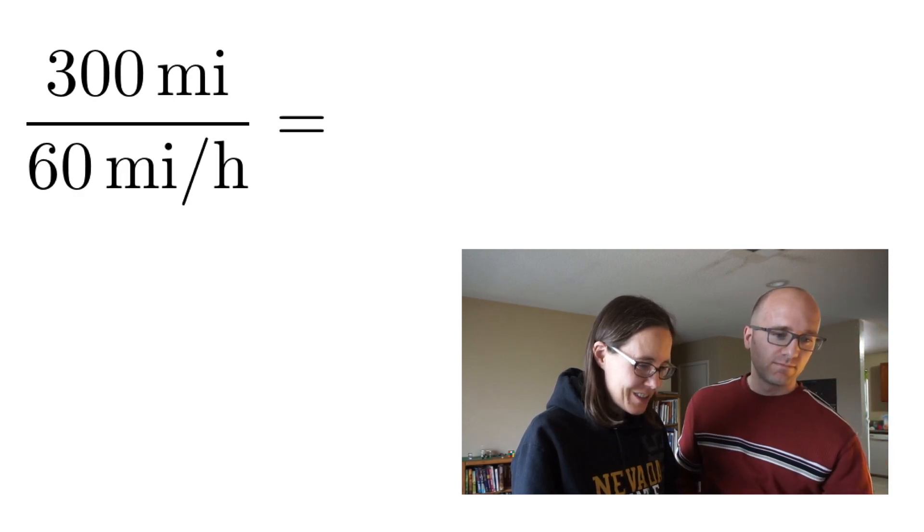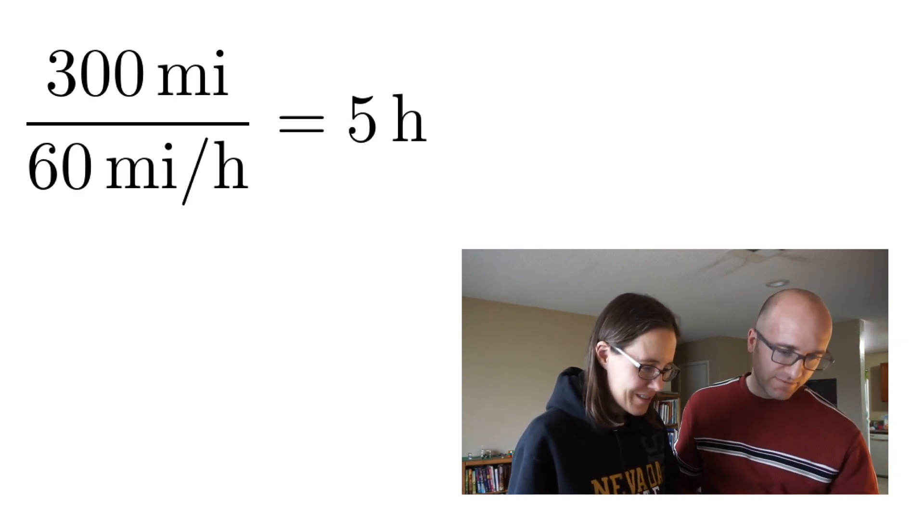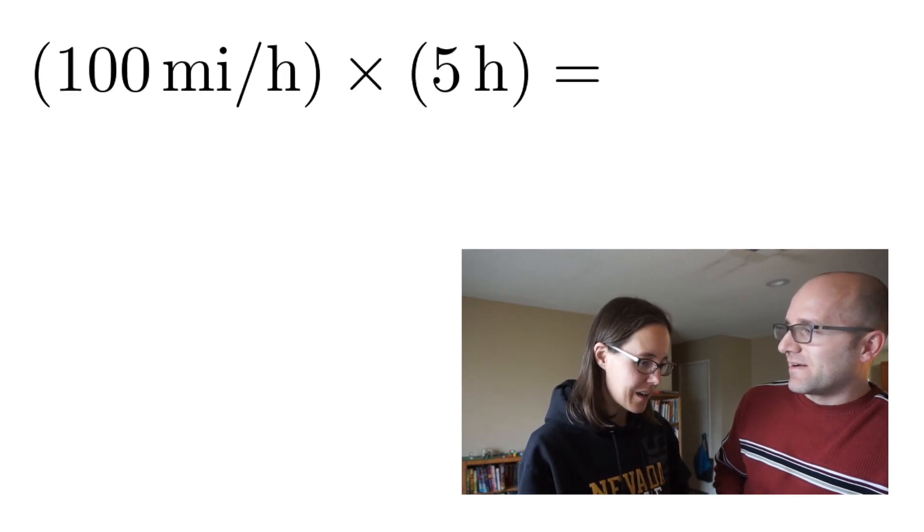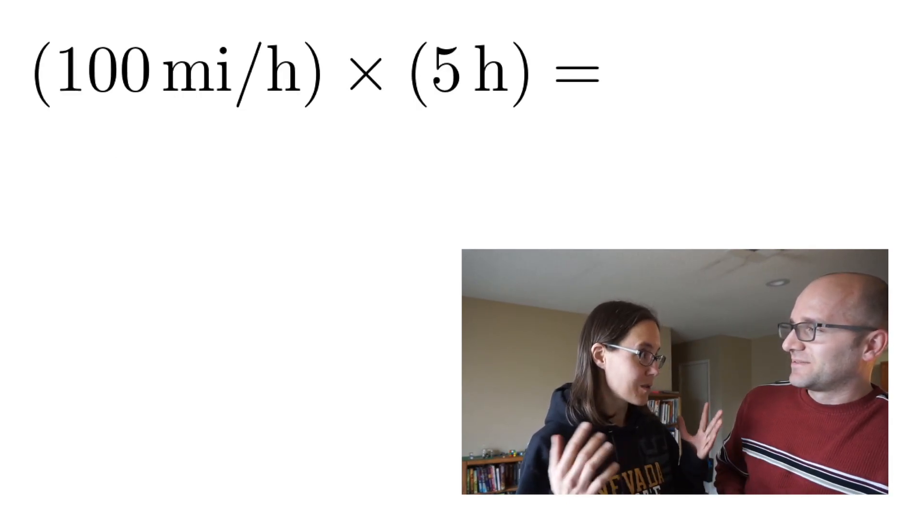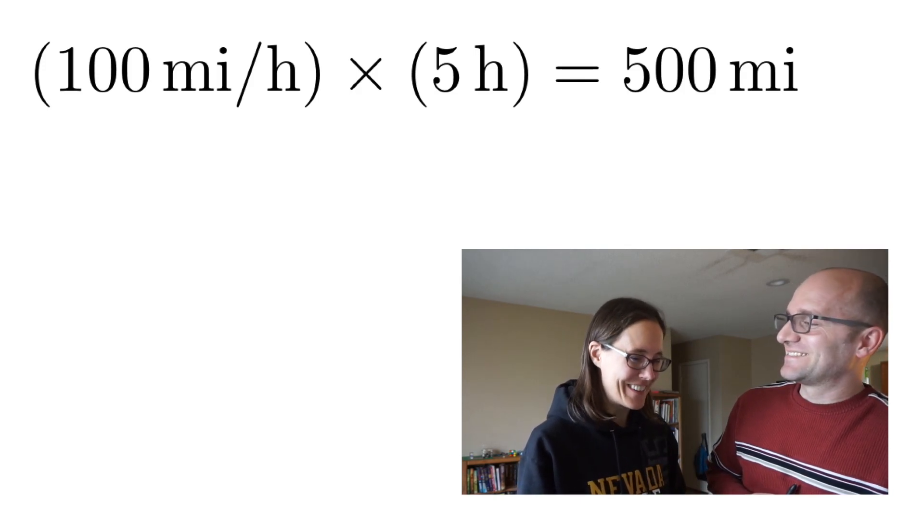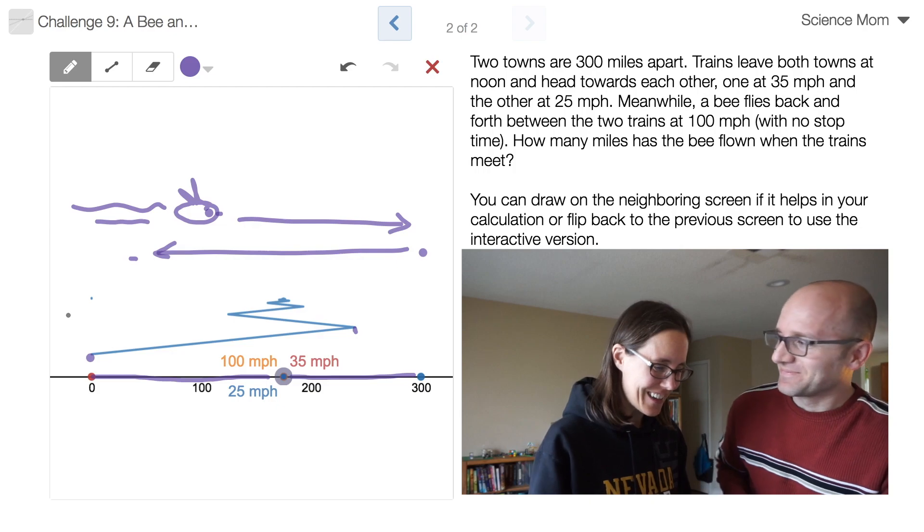Hold on a second. Five. Five hours. So the bee's traveling five hours at 100 miles per hour. So it travels 500 miles. 500 miles. That is so cool! Very nice shortcut. I like it. Thanks.